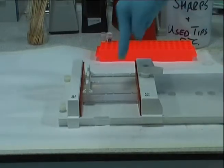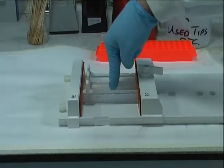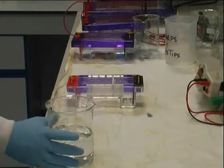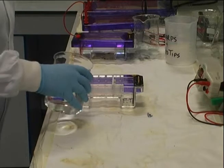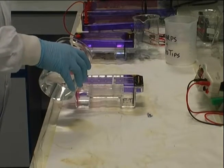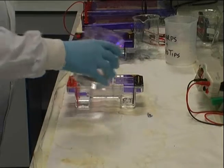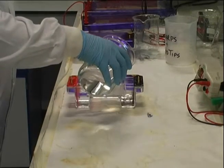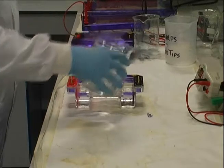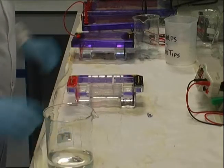After the gel has cooled, a quick check is needed to make sure it is semi-solid. At this point, the set gel is placed in the electrophoresis chamber and immersed in conductive buffer. Then the comb is removed to allow loading of the DNA from the PCR reactions into the newly formed wells.